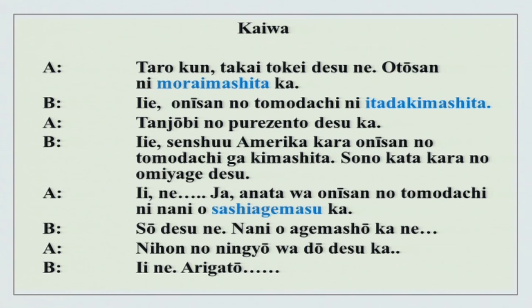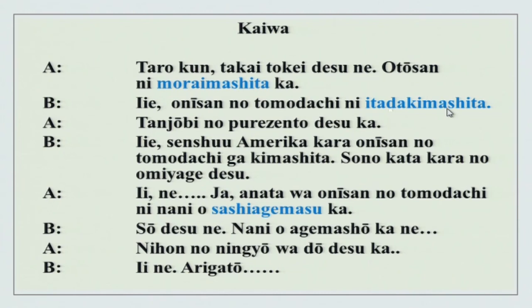Taro kun - kun is for son, for boy, as chan is for girls. Mariko chan and Taro kun. Takai tokei desu ne. O toosan ni moraimashita ka - did you receive it from your father? Iie, o niisan no tomodachi ni itadakimashita. Itadakimasu is similar to moraimasu but polite. Why polite? Because o niisan - elder brother - no tomodachi, from his friend you have received. Thus it is itadakimasu.